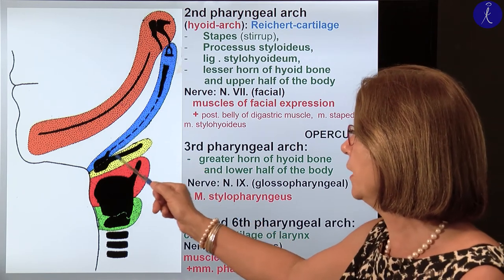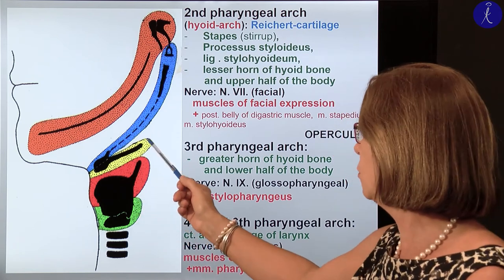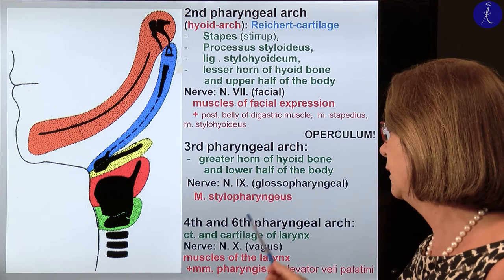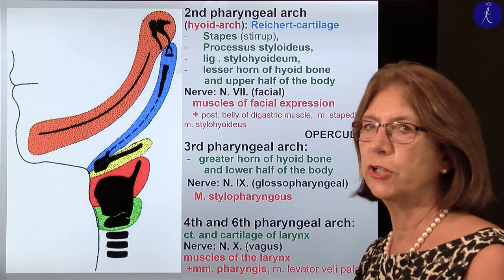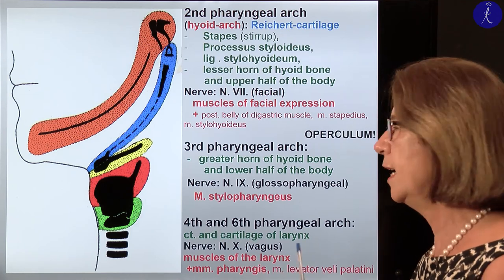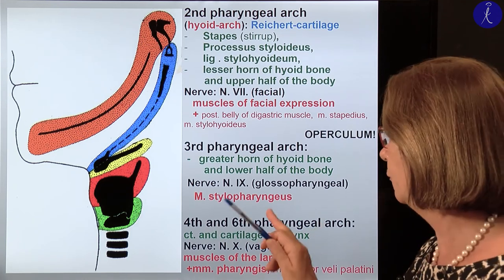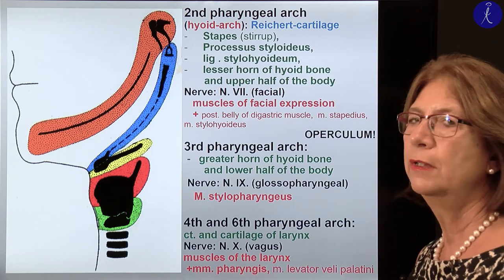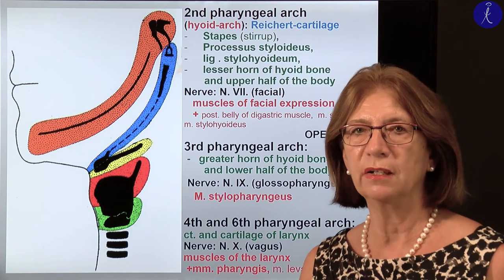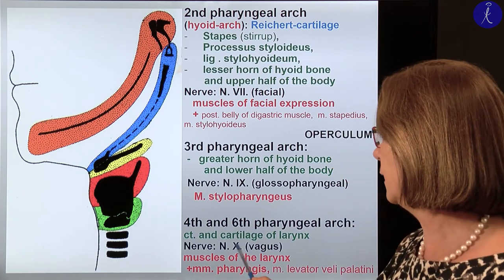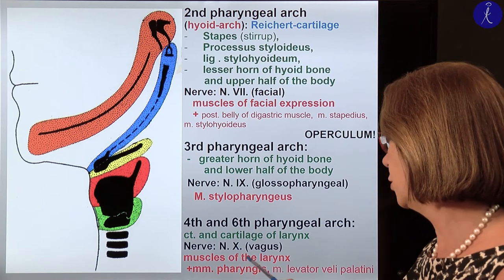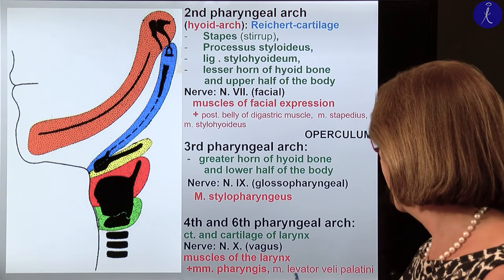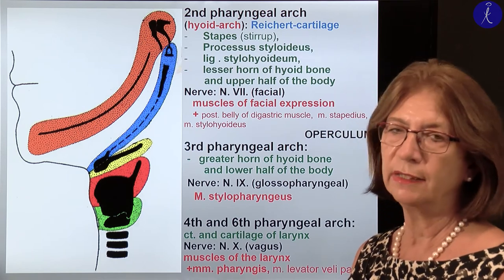The third pharyngeal arch, marked here in yellow, gives the greater horn of the hyoid bone and the lower half of the body. The nerve for this arch is the glossopharyngeal nerve, which innervates the stylopharyngeal muscle. The fourth and the sixth pharyngeal arch — remember there is no fifth arch — will give the connective tissue and cartilages of the larynx. The nerve will be the vagus nerve. The muscles in this arch give the muscles of the larynx, plus the constrictor pharyngeal muscles and the levator veli palatini muscle — all innervated by the vagus nerve.